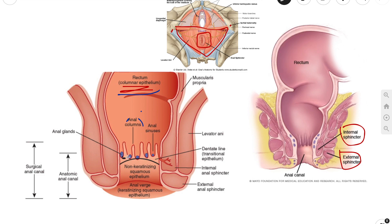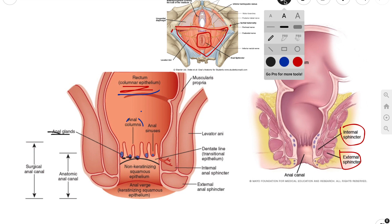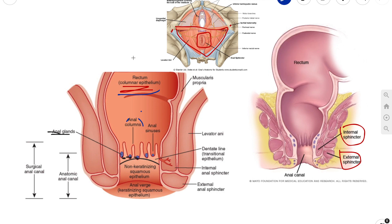They are joined together at their inferior ends by anal valves. Above those anal valves are small pouches called anal sinuses. These sinuses contain glands — the anal glands — which secrete mucus. I'm sorry, it's mucus, not mucosa, because mucosa is something else.